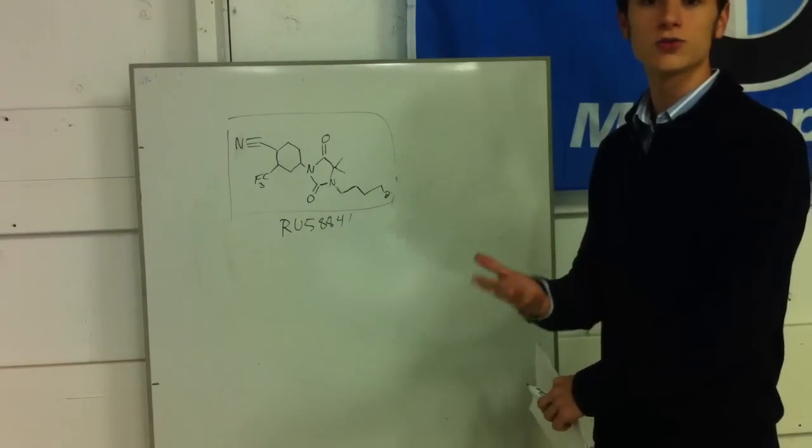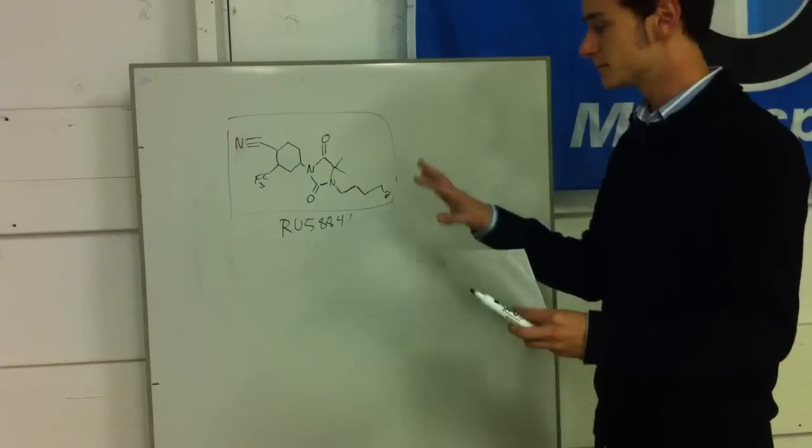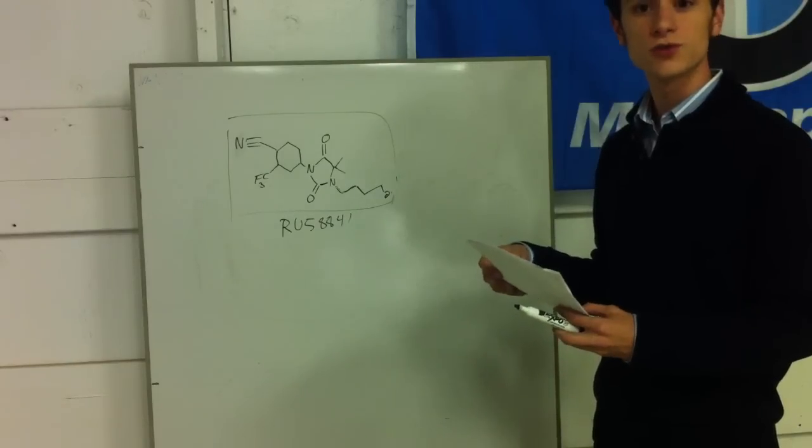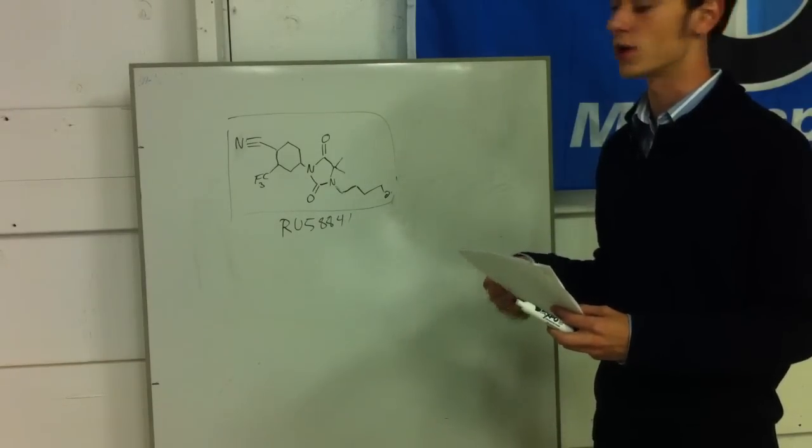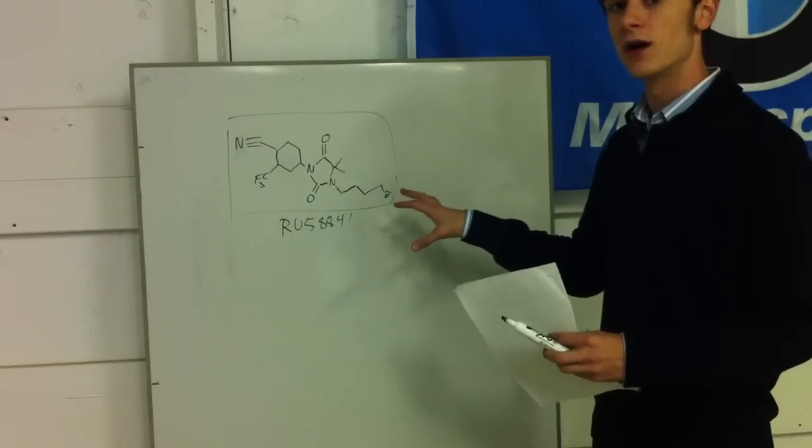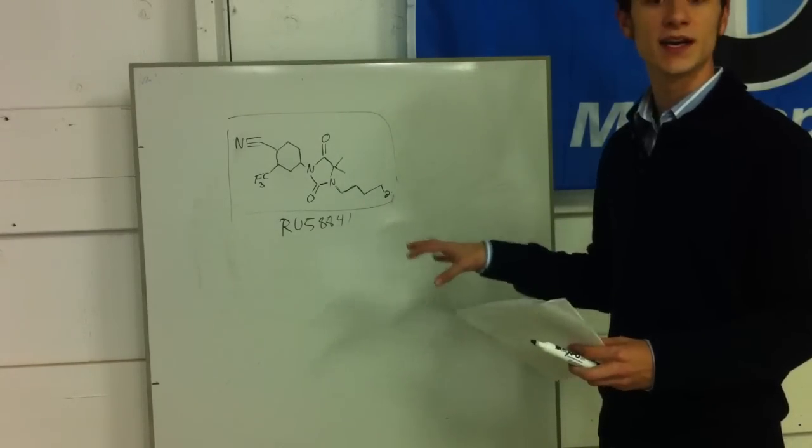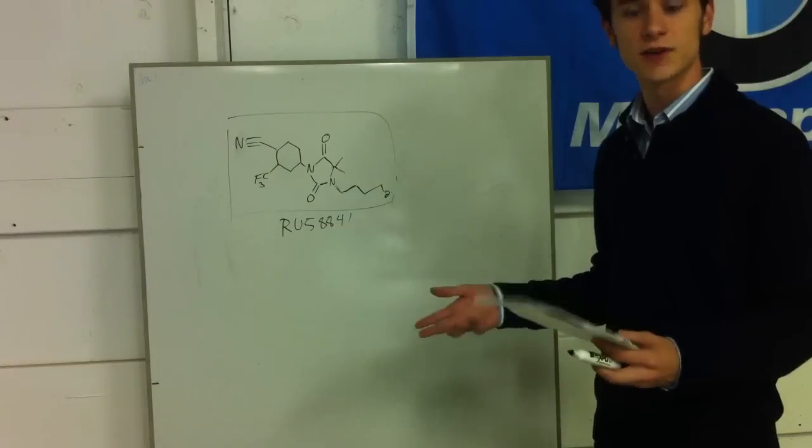Brain fog, all sorts of side effects because RU58841 can get into the bloodstream. Whereas a prodrug variation of RU58841 can not only better treat the androgenetic alopecia because it's getting into the cells, but it has lower systemic side effects.